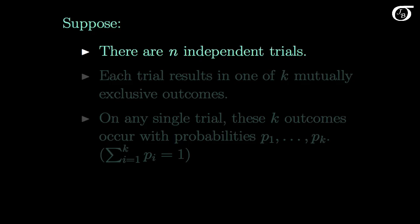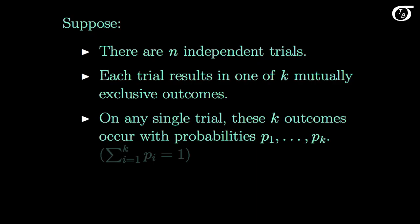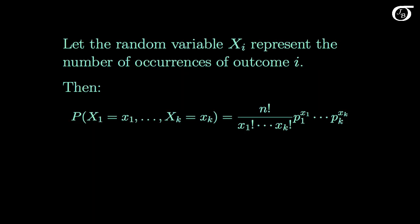Suppose we have n independent trials, and each trial results in one of k mutually exclusive outcomes. These k outcomes are exhaustive, so one of them is going to occur. On any single trial, these k outcomes occur with probabilities p1 through pk. Since these outcomes are mutually exclusive and exhaustive, they must sum to 1. We also need these probabilities to stay constant from trial to trial. We're going to let the random variable x sub i represent the number of occurrences of outcome i, where i takes on the values 1 through k, representing those k possible outcomes. So we are going to have k random variables representing a count for each of those possible outcomes.